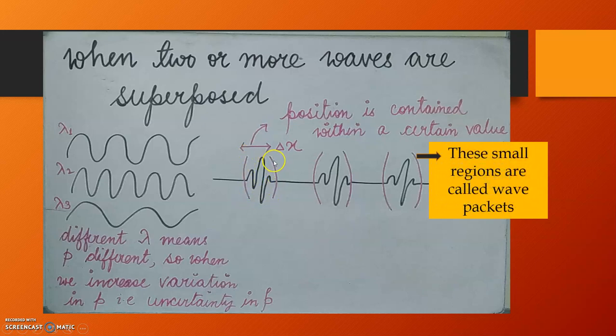And, this wave can easily be thought of as consisting of various wave packets. These particular positions, these are called the wave packets. So, as if when the momentum values have become little uncertain, the position has been localized.